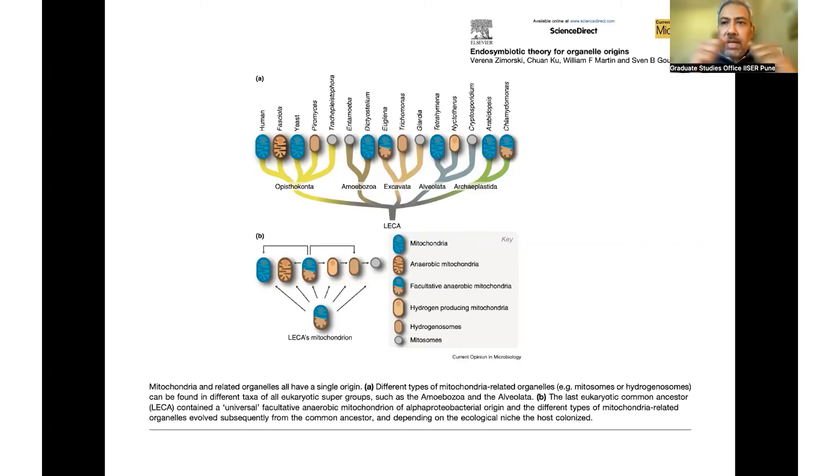And so there are many coming togethers that may have happened that eventually may have given rise to the mammalian cell and to all these other variants that exist. So clearly this is evolution working in ways that allows for certain properties or traits to be selected. But the important point is that the idea that such an intake can happen seems to be fairly, there is now convincing evidence to suggest that that is likely to have happened.